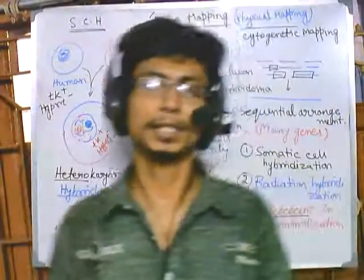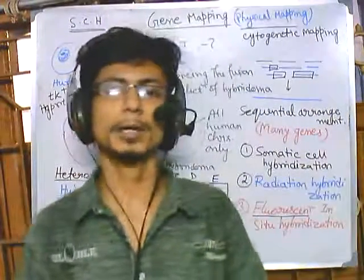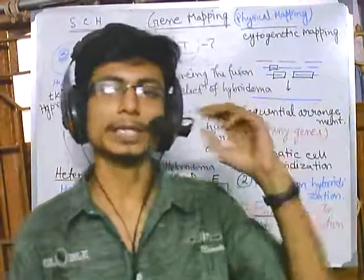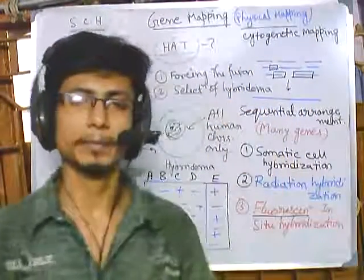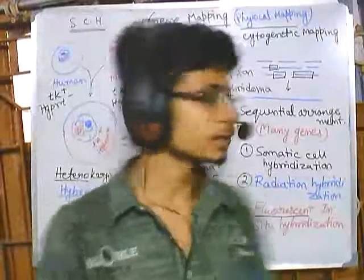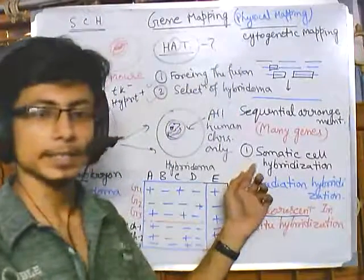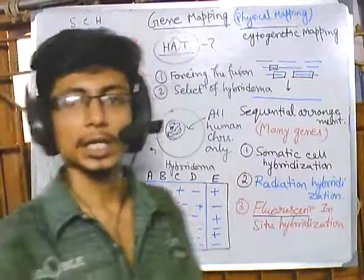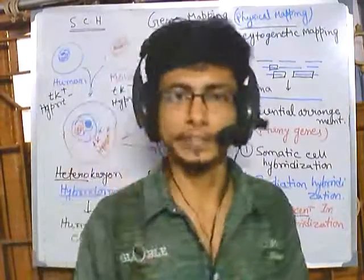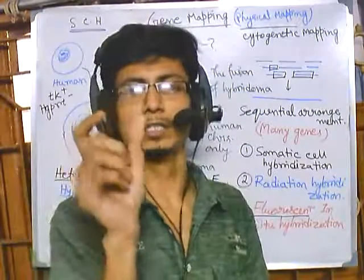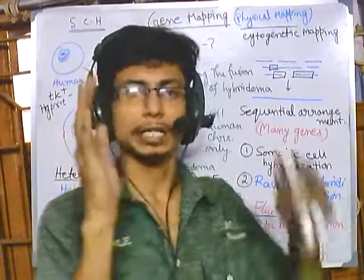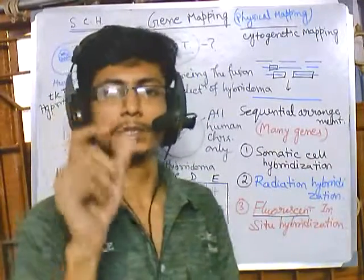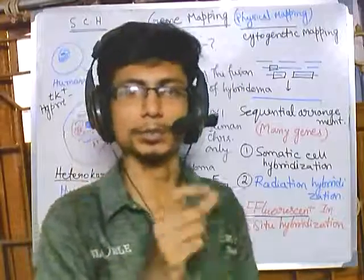Welcome back friends. We are talking about the different techniques of physical mapping or cytogenetic mapping. In the previous video we talked about the somatic cell hybridization process, which is a very important technique of mapping genes physically, deriving gene positions relative to each other, and knowing the position of a gene in a particular chromosome.